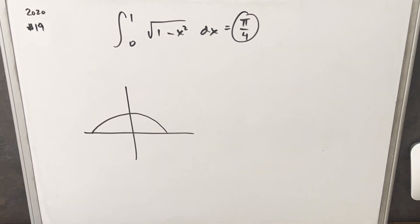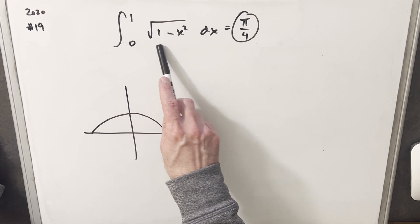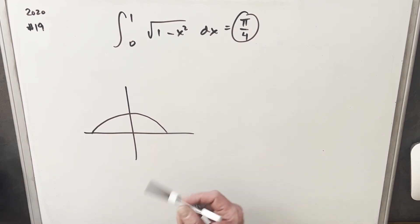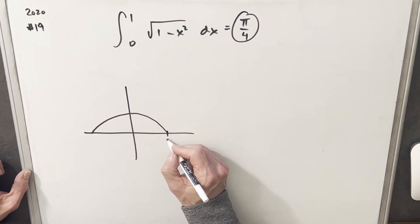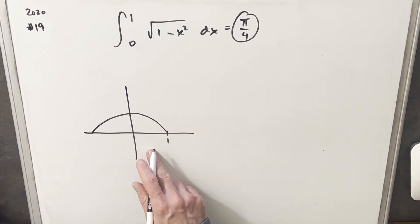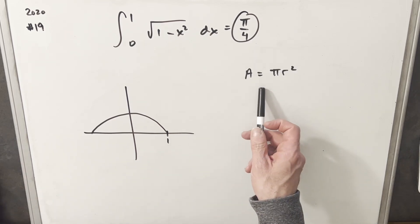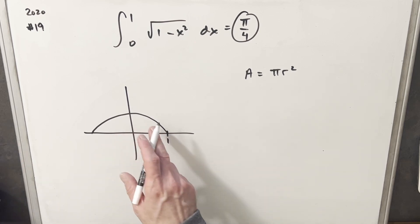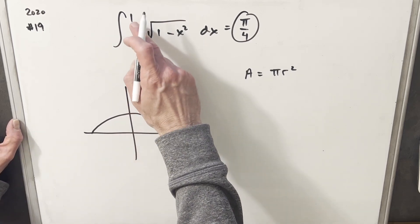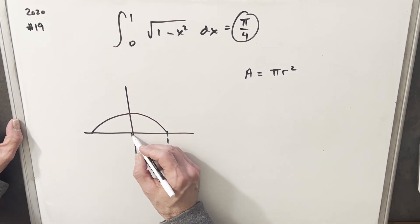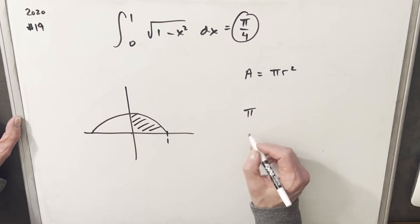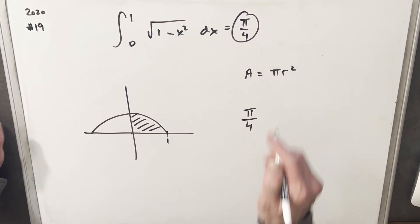Before we finish, I want to mention the other method I used previously. The graph of the square root of 1 minus x squared is just the top half of a unit circle — if you plug in 1 you get 0. So this is just half of our unit circle. With the area formula for a circle with radius 1, the area is pi, so the half circle is pi over 2. But our bounds are 0 to 1, so we actually just want a quarter of the circle, giving us pi over 4.